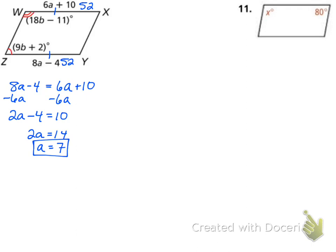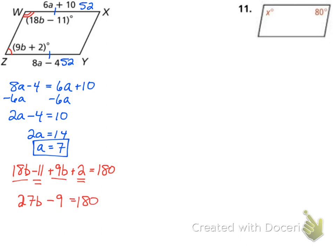Then we have two angles that are consecutive, so they must be supplementary. The equation is 18B minus 11 plus 9B plus 2 equals 180. Combining: 27B minus 9 equals 180. Add 9: 27B equals 189. Divide by 27: B equals 7. Plugging back in, 9 times 7 plus 2 gives 65 degrees for this angle, and since they're supplementary, 180 minus 65 gives 115 degrees for the other.